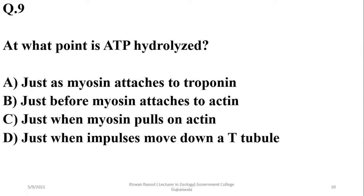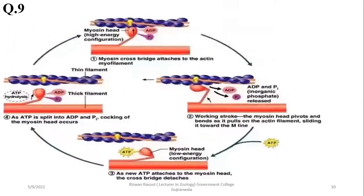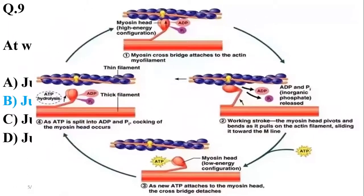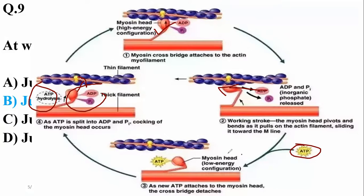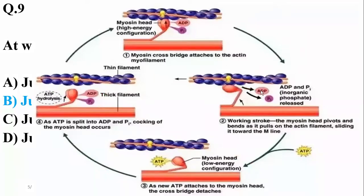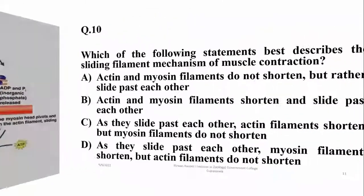ATP is hydrolyzed just before the myosin head attaches to the actin. ATP hydrolysis brings the myosin head into a high-energy configuration. Energy is released after the sliding of the actin filament, and new ATP arrives when myosin is in low-energy configuration to bring it back to high-energy configuration after its breakdown. The right option is beta.